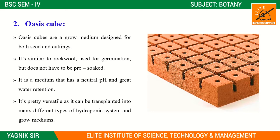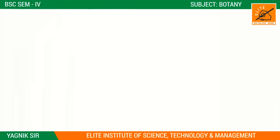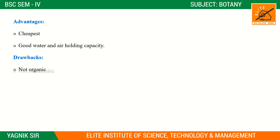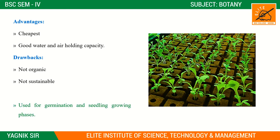Oasis cubes have great water retention and are pretty versatile, as they can be transplanted into many different types of hydroponic systems and growing mediums. Some very important advantages are that they are very cheap and have good water and air holding capacity. But they also have some drawbacks — they are not organic and not sustainable. These oasis cubes are very useful in the germination and seedling growing phase.